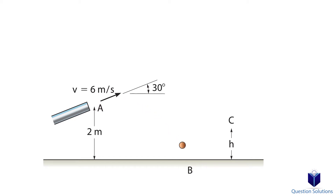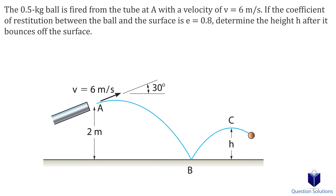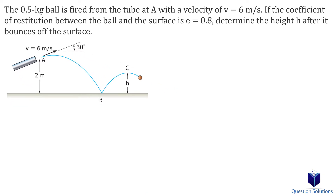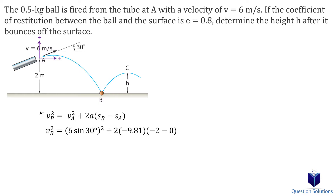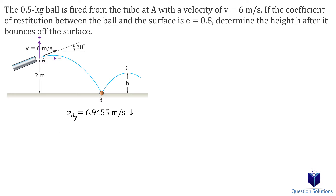Let's take a look at this example where we need to find the maximum height of the ball after it bounced once. For this question, we need to remember kinematics equations from the early chapters. First, we can calculate the vertical velocity of the ball at point B by writing a kinematics equation. We will pick up to be positive and establish our coordinate system at the location where the ball is being fired from. We are only considering the vertical component of velocity. We have the ball's y-component of velocity at location A, plus 2 times the acceleration due to gravity (negative since it's downwards), and the final height is 2 meters below our origin, with initial height 0. Let's solve for the vertical velocity. This velocity tells us the y-component of velocity of the ball at point B.